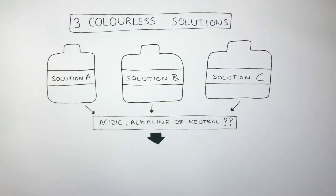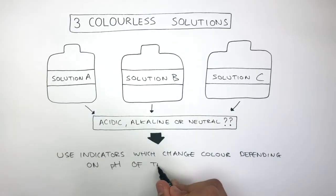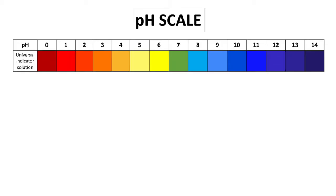To know this information, we use indicators which change colour depending on the pH of the solution. We can use a pH scale to tell us how acidic, alkaline, or neutral substances are. The pH scale is from 0 to 14 and is linked to colours.